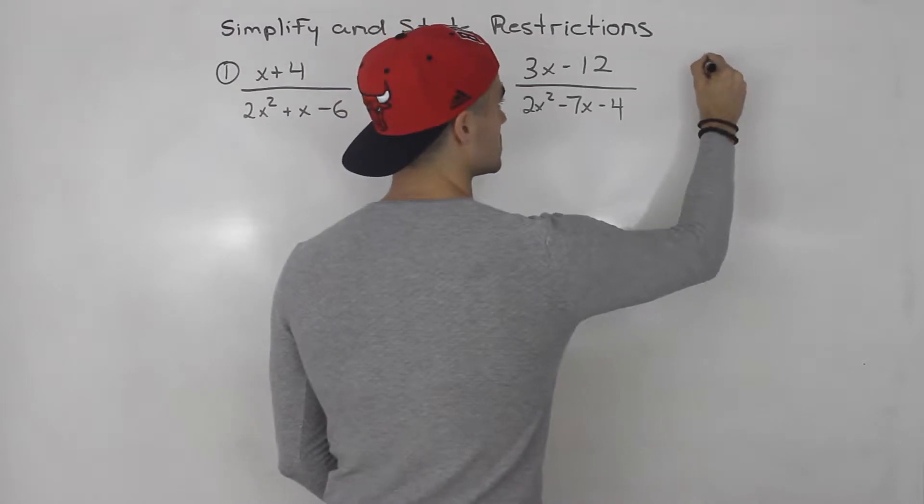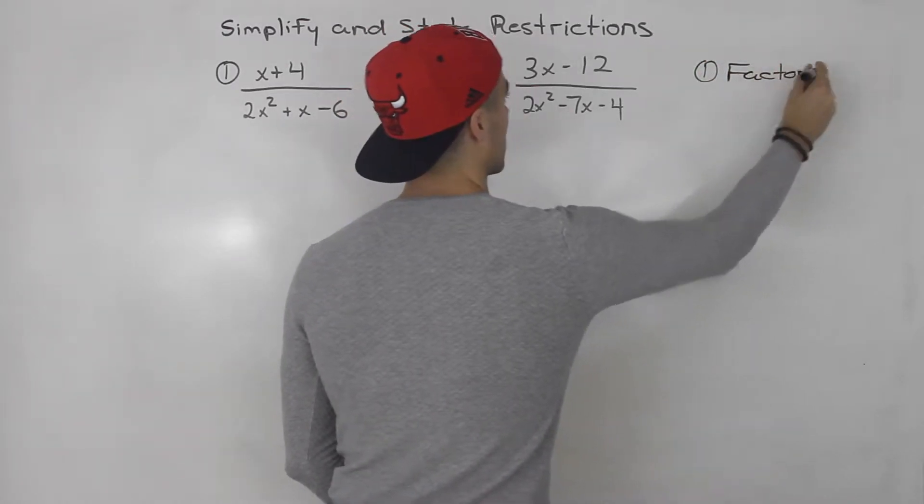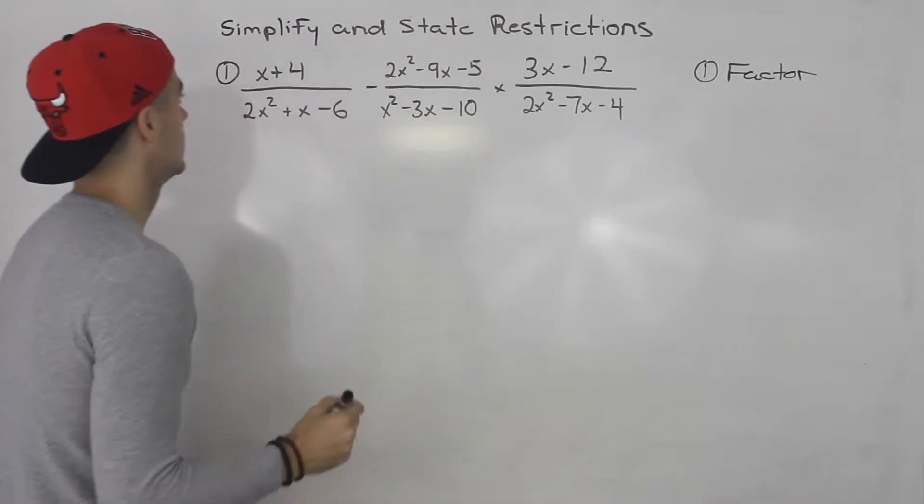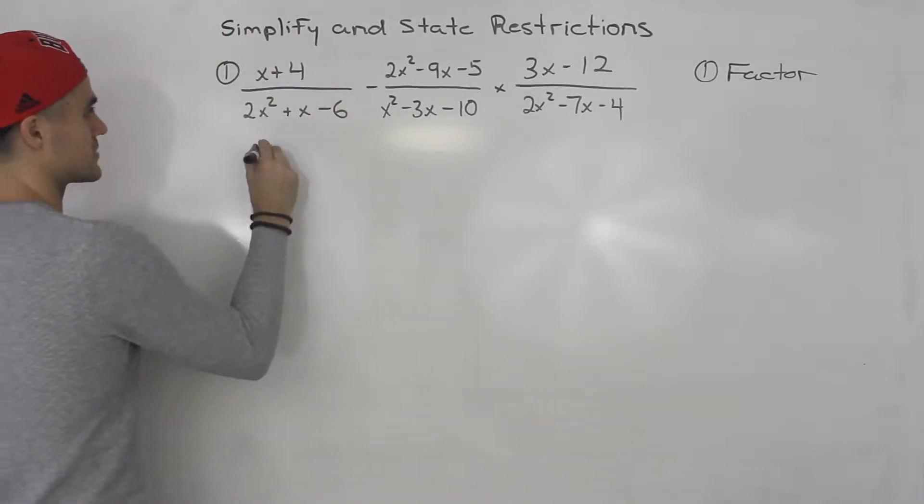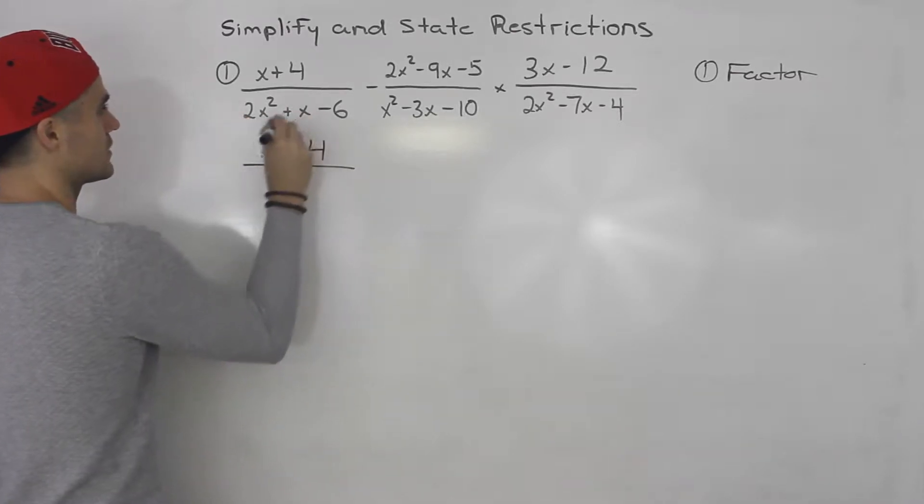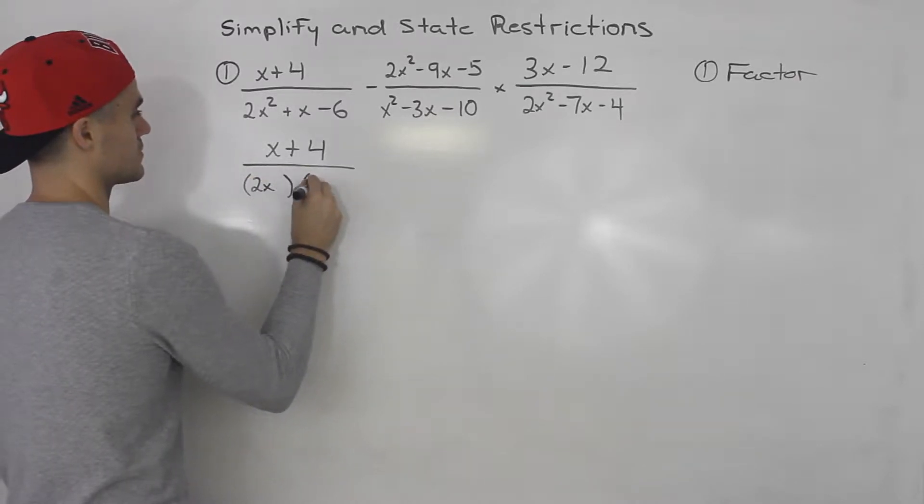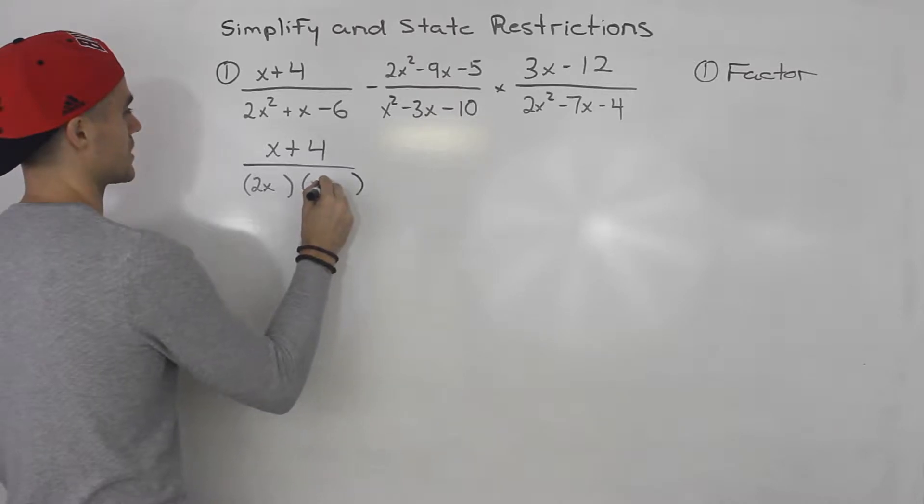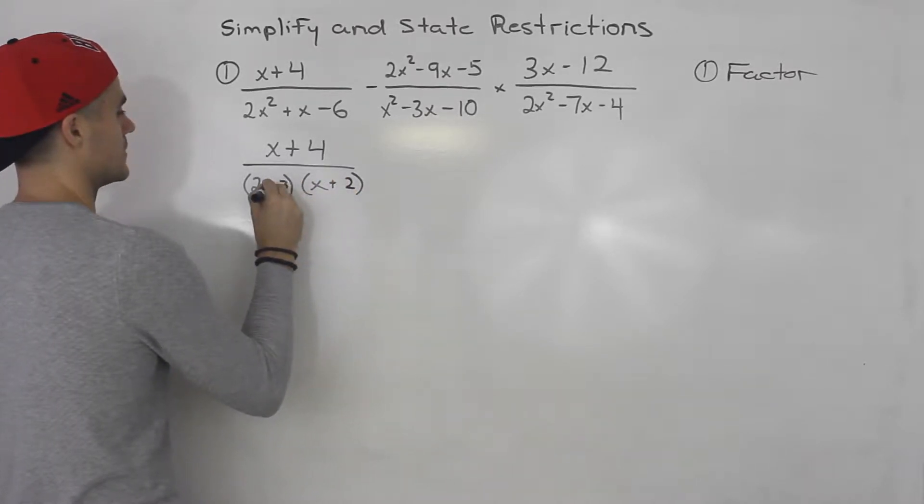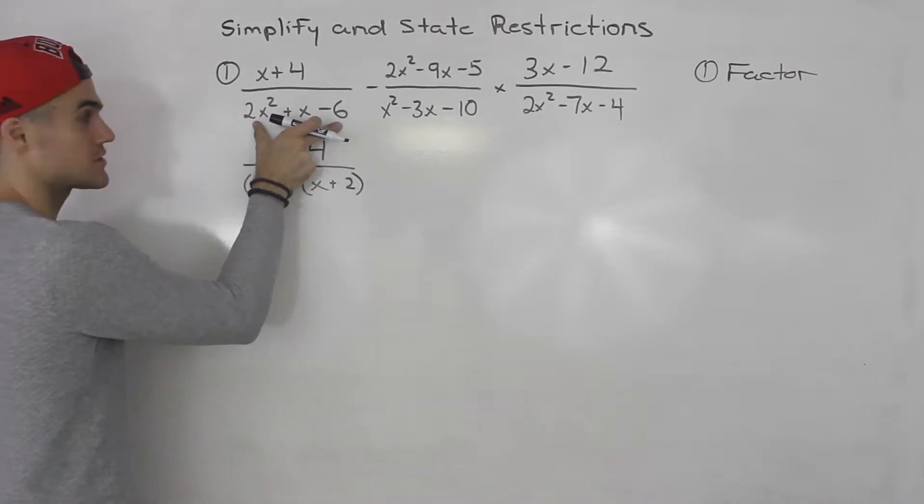First thing you want to do is factor everything. Make sure that everything is factored. So notice x plus 4, that can't factor any further. This here, 2x squared plus x minus 6, this will factor into 2x minus 3 times x plus 2. That's what this factors into.